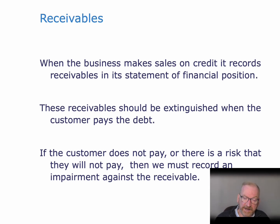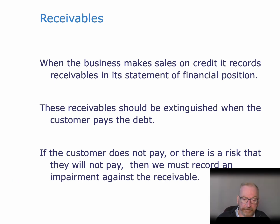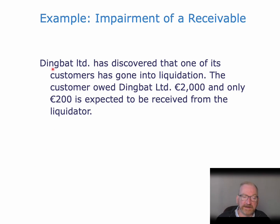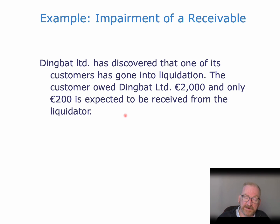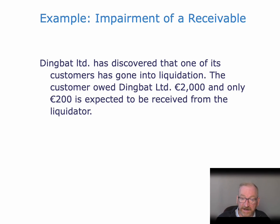If the customer does not pay, or there is a risk that they will not pay, then we must record an impairment against the receivable. So let's say that this company, Dingbat, has discovered that one of its customers has gone into liquidation. The customer owed Dingbat Limited 2,000 and only 200 is expected to be received from the liquidator. So we will have recorded 2,000 as a receivable sitting in our balance sheet, and we now need to cancel 1,800 of that receivable because it is not going to be received.